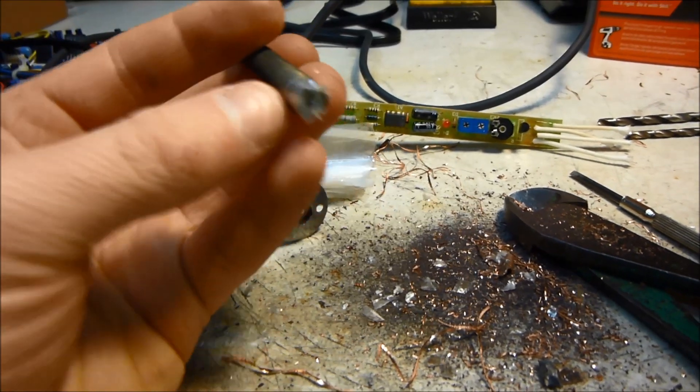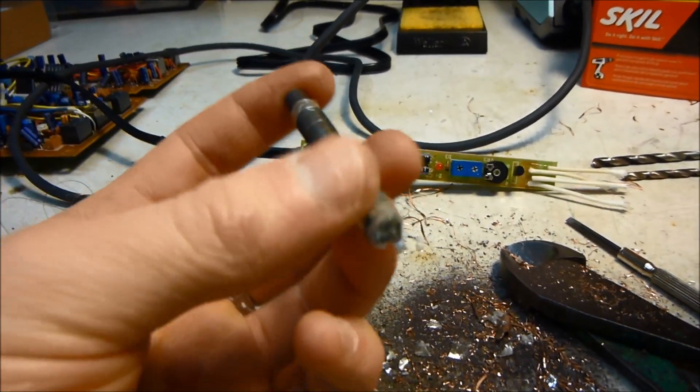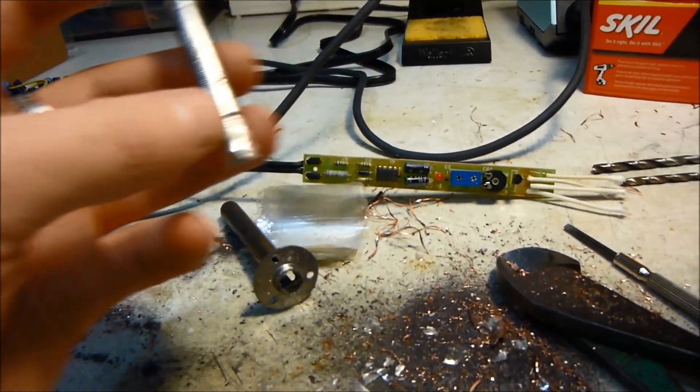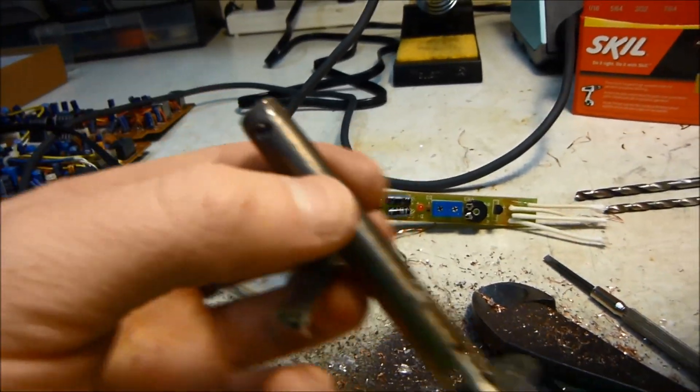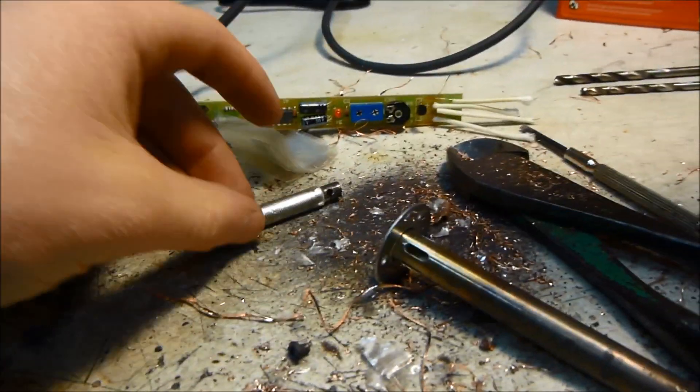then the drill bit gets caught on whatever is back there, the steel or whatever, and it basically twists this part all up inside of here, and then the wires break off, and then you're left with a big mess like this.